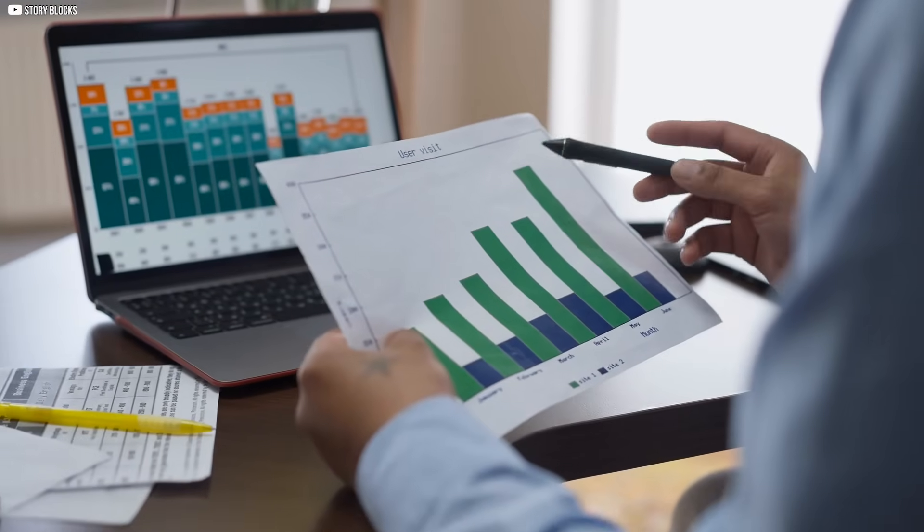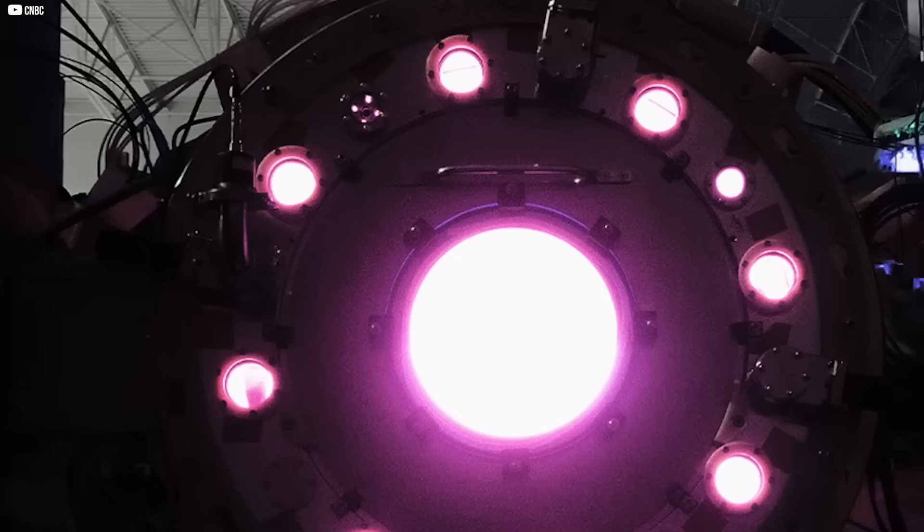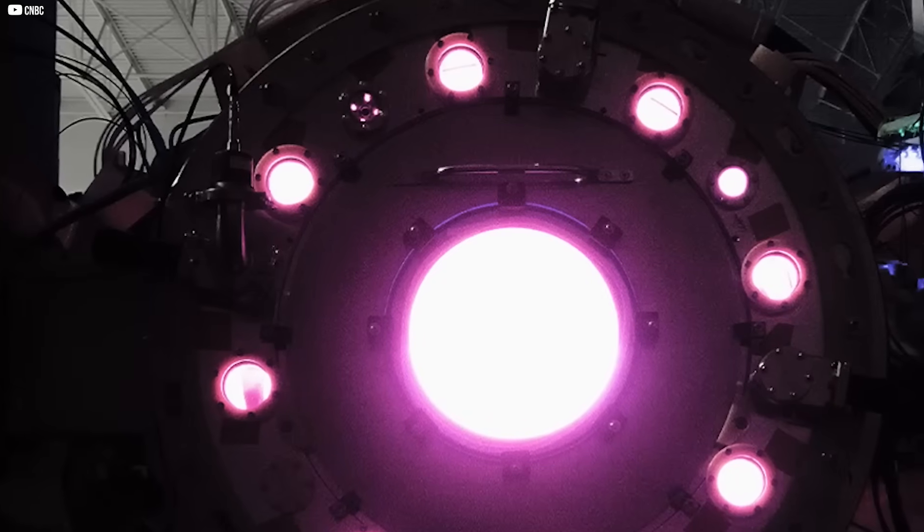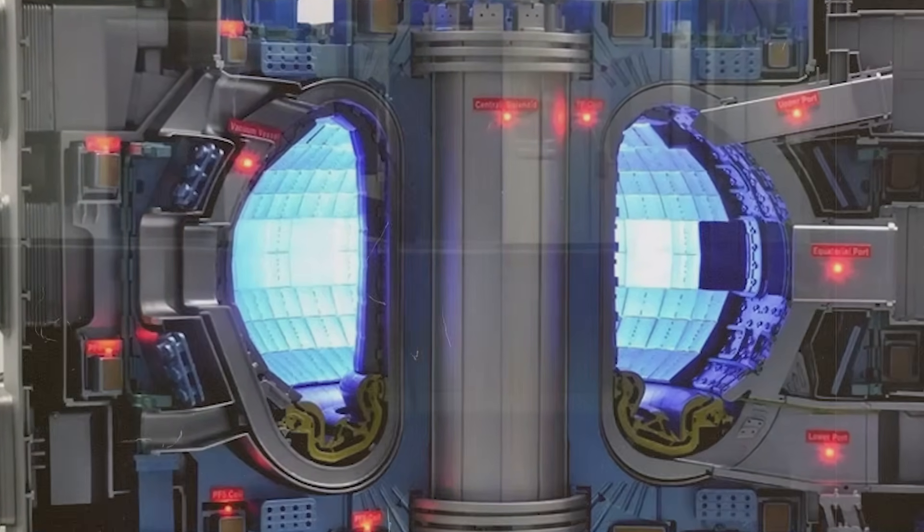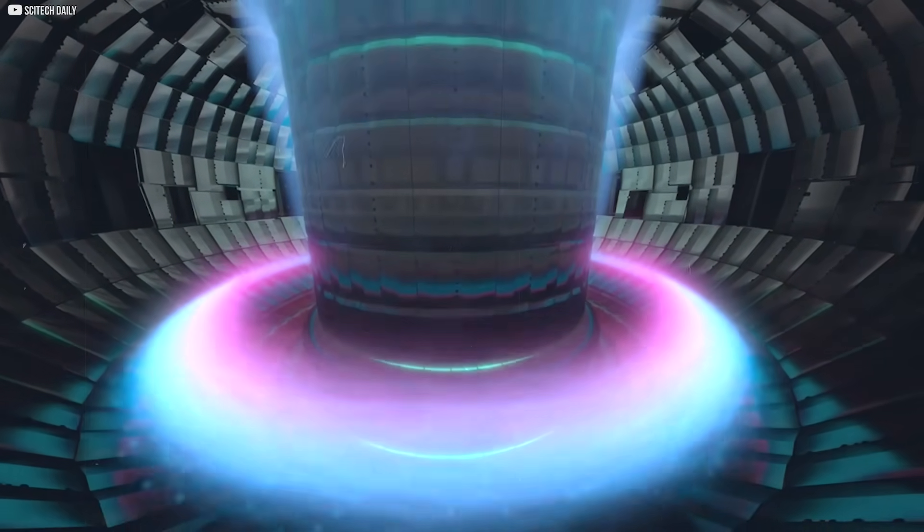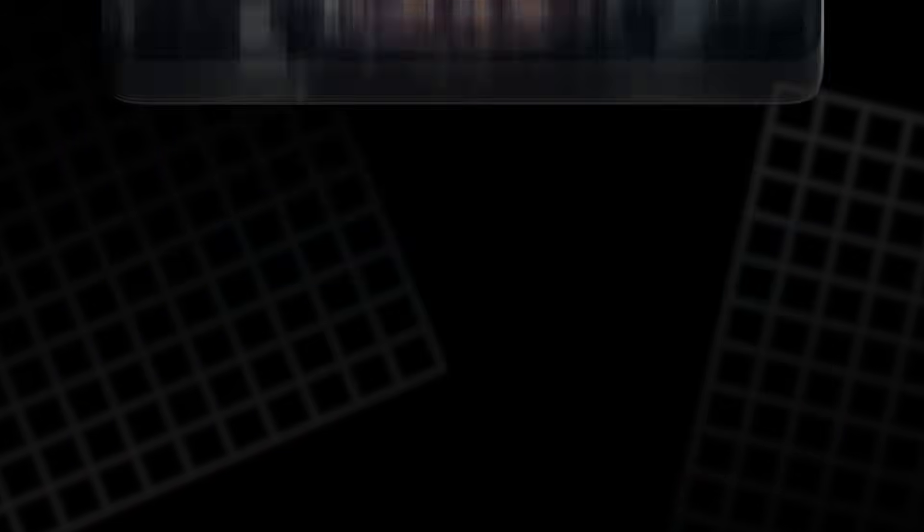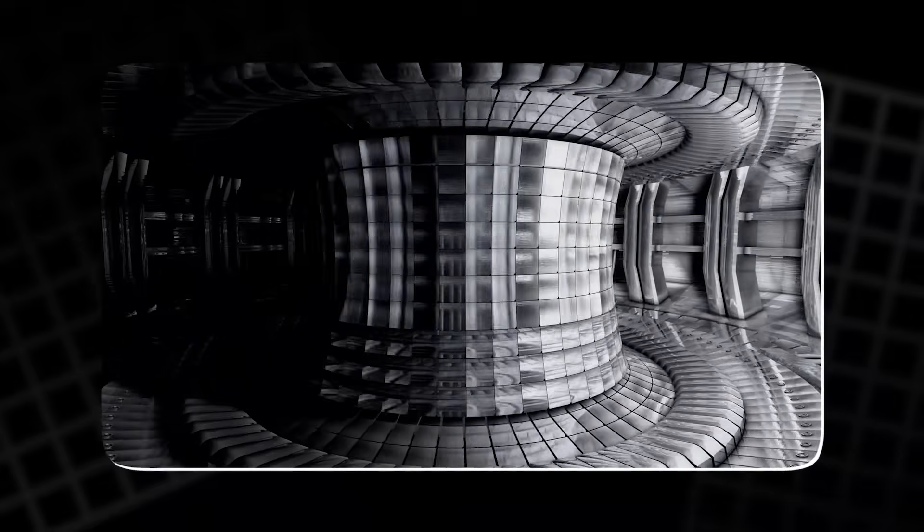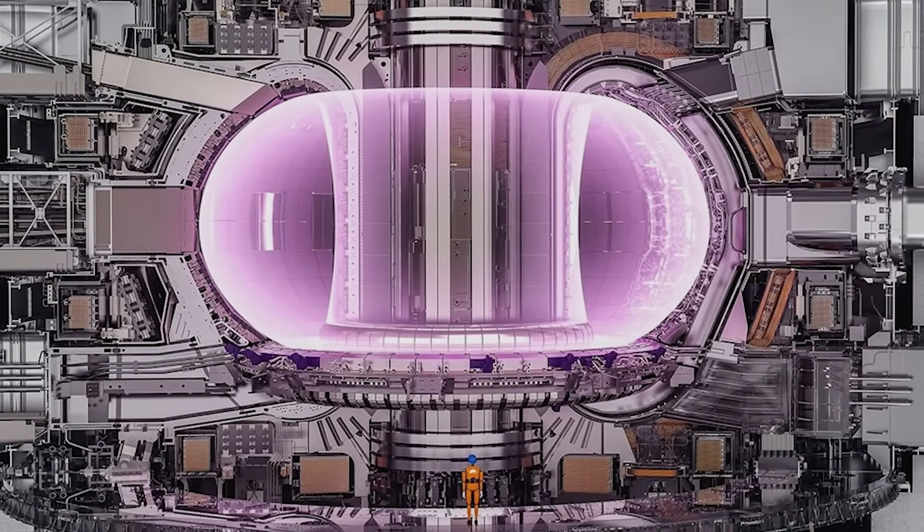Imagine the triple product plotted on a graph. The x-axis is temperature. The y-axis is the triple product itself. There's a blue-shaded region, the fusion power plant zone. Anything inside it is considered viable for real energy production. Before, ITER was expected to just reach the edge of that zone, just enough to prove fusion can work. But with this new density model, its potential shifts.